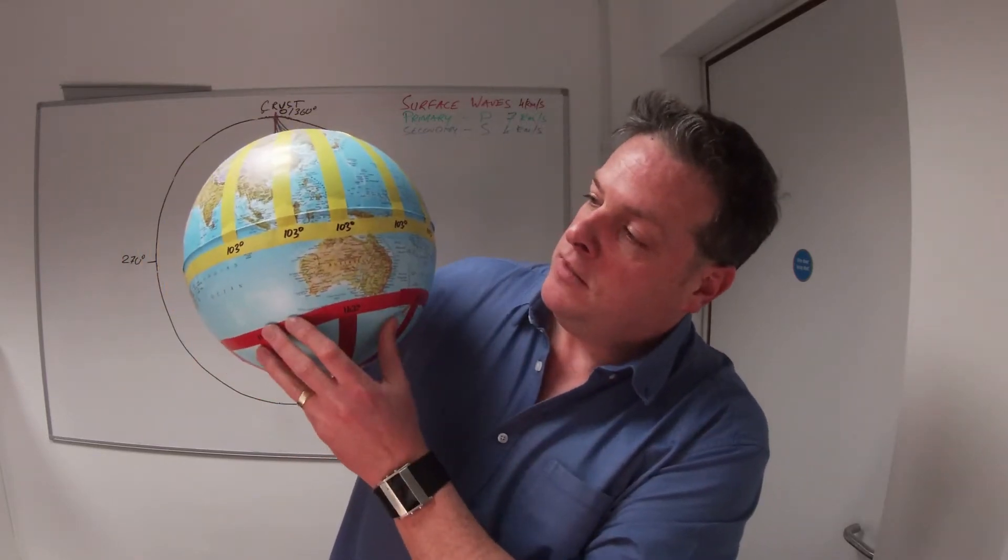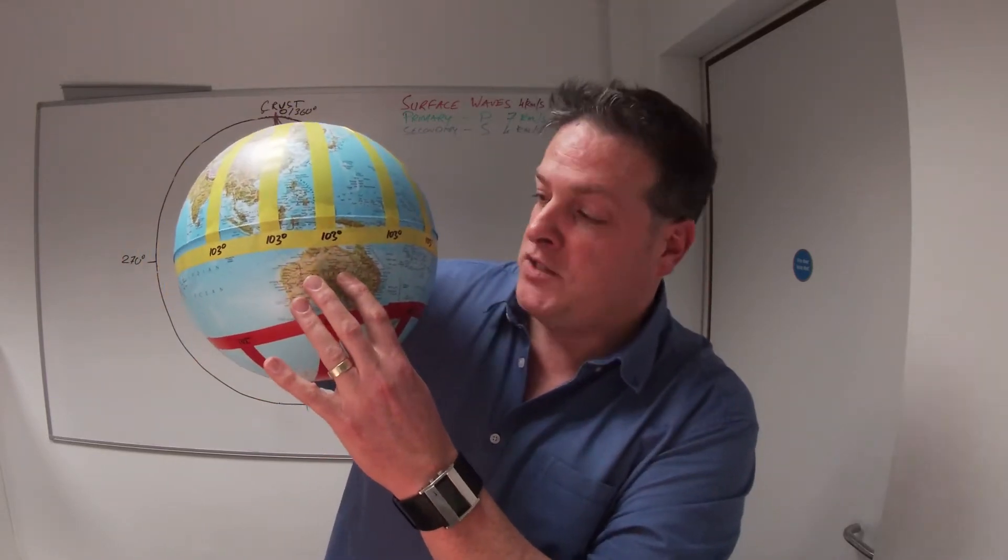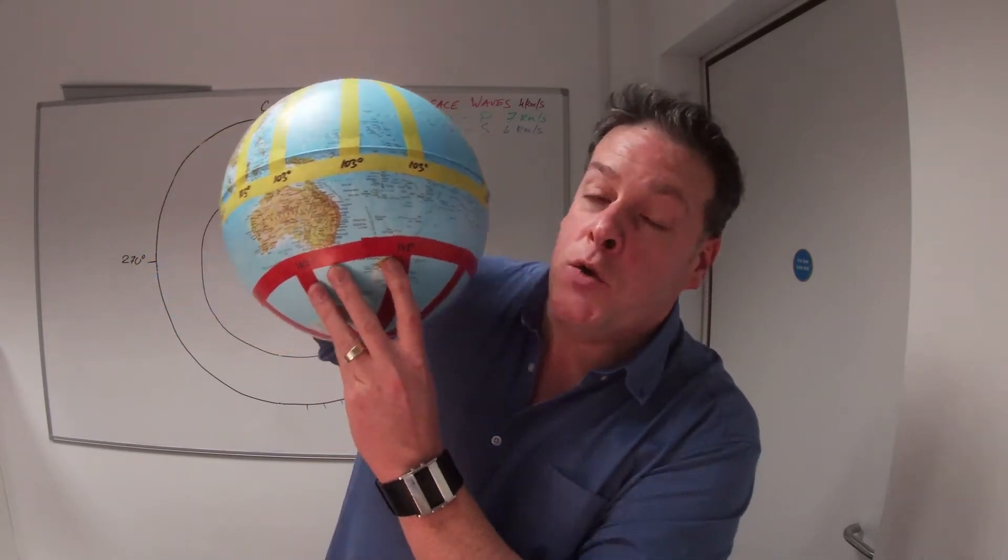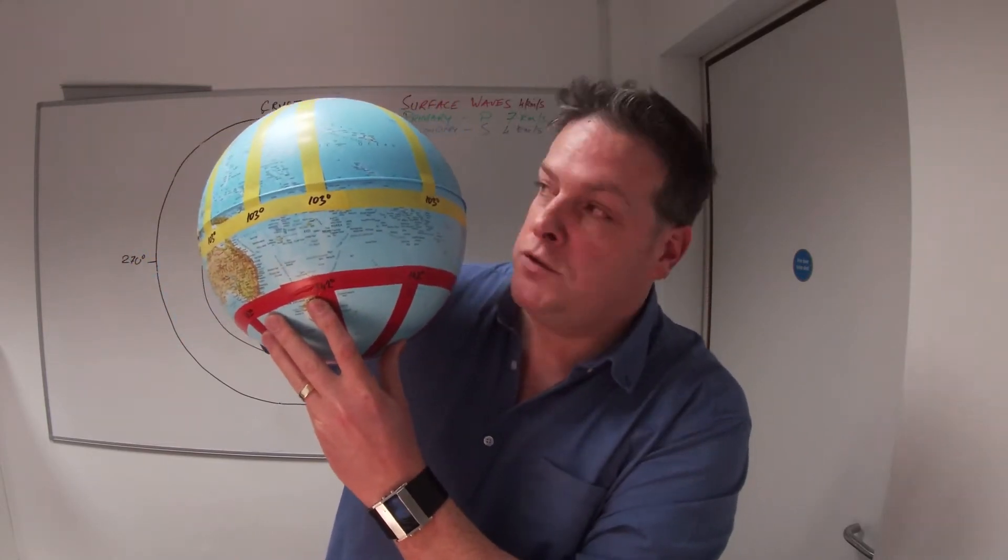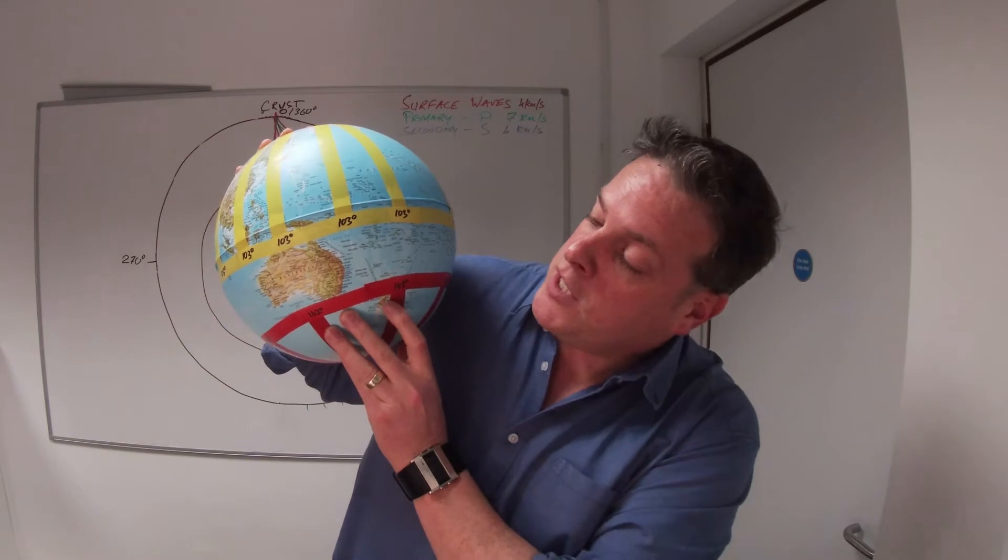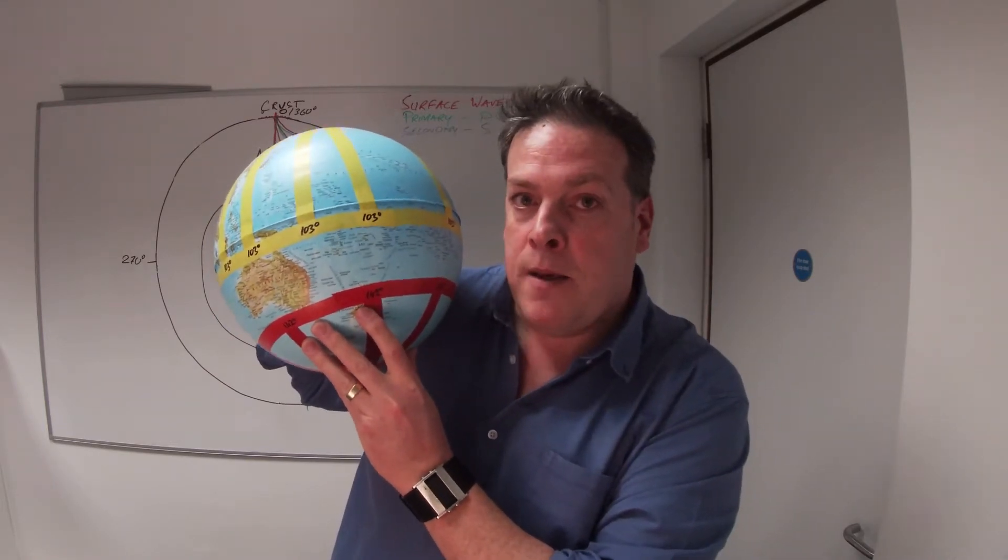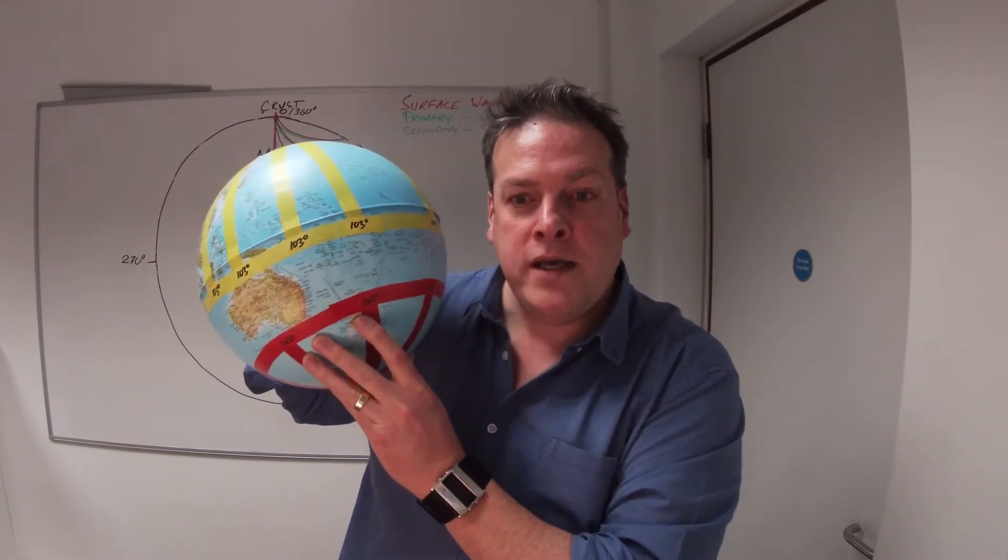Then all of a sudden you start detecting P waves again, but not S waves. We don't see any S waves whatsoever. For example, in Australia you wouldn't detect any P or S waves, but in New Zealand, which is below 142 degrees from the North Pole, you'll start to see P waves again but no S waves.